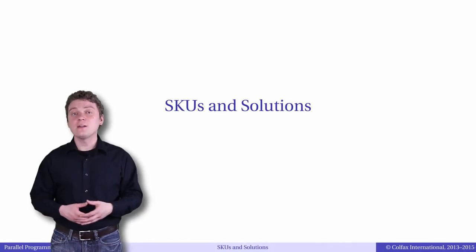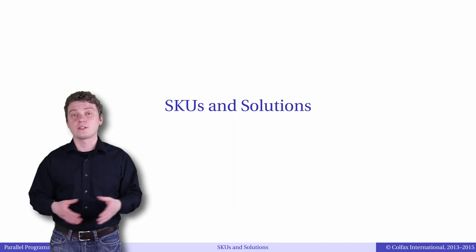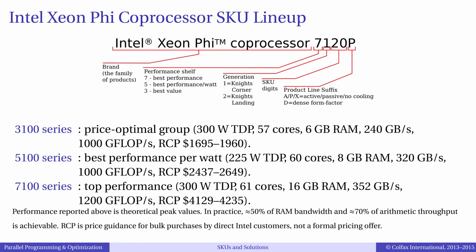In the final minutes of this video, let me introduce the available models of Intel Xeon Phi Co-Processors. They come in performance tiers: the 3000 series, 5000 series, and 7000 series. The 3000 series has 57 cores and 6 GB of RAM — this is the price-optimal tier. The 5000 series has 60 cores with 8 GB of RAM at 225W TDP, corresponding to optimal performance per watt. The 7000 series has 61 cores with 16 GB of RAM and a theoretical maximum performance of 1.2 teraflops per second in double precision — this is the highest performance tier. In the naming convention for Xeon Phi models, also pay attention to the second digit, which indicates the co-processor generation. Currently the only available generation is 1, corresponding to the Knight's Corner chip.